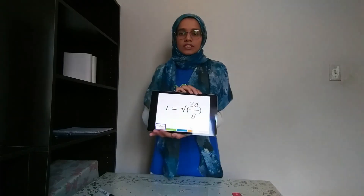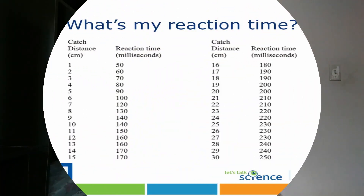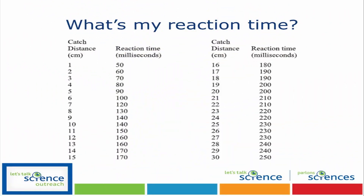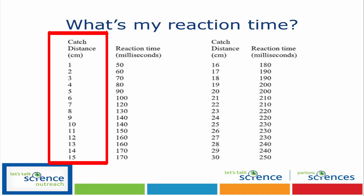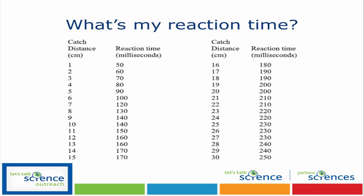Now that we have the distance that the ruler fell, how do we get our reaction time? We can use the equation shown on your screen that takes into account the force of the earth, which we call gravity, as well as the distance that the ruler fell. Alternatively, instead of using the equation, we can also use the chart on your screen. The chart has two categories: the distance the ruler fell in centimeters, and the reaction time in milliseconds. Milliseconds are one thousandth of one second — that's a very short period of time. So in my example, since I got 15 centimeters, my reaction time is 170 milliseconds.